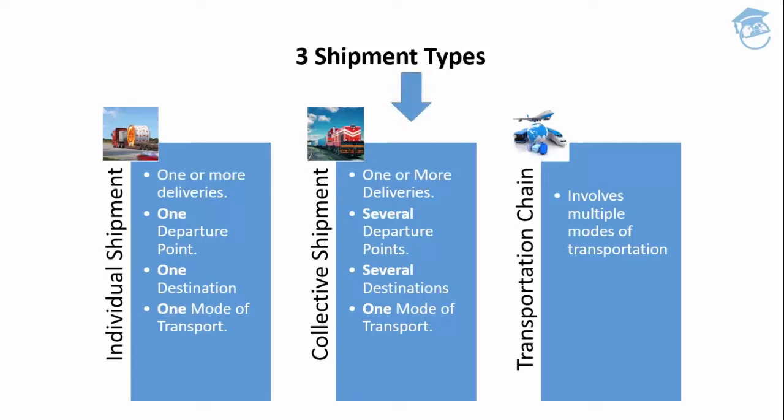The second shipment type is a collective shipment. Similar to the individual shipment, it has one or more deliveries. However, it can have several departure points as well as several destinations, while still using only one mode of transportation. The difference between the individual shipment and the collective shipment is that the collective shipment supports several departure zones and several destinations, unlike the individual shipment which supports only one of each.